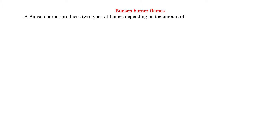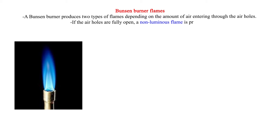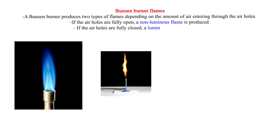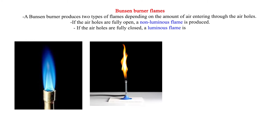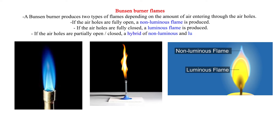Bunsen burner flames. A Bunsen burner produces two types of flames depending on the amount of air entering through the air holes. If the air holes are fully open, a non-luminous flame is produced. If the air holes are fully closed, a luminous flame is produced. If the air holes are partially open or closed, a hybrid of non-luminous and luminous flames is produced.